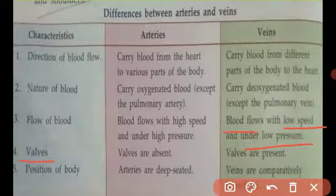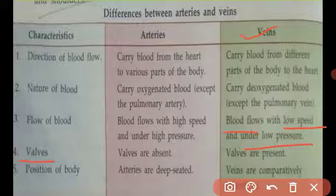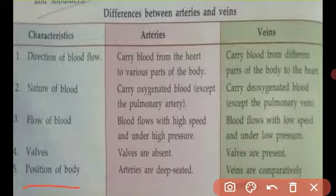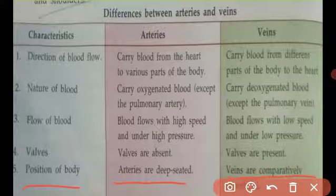Regarding valves: arteries have no valves because they carry blood from heart to body, moving with gravity, so no backflow prevention is needed. Veins carry blood from body parts like legs, lower abdomen, pelvic cavity — against gravity — so veins have valves to prevent backflow of blood. Regarding position: arteries are deep-seated in our body because they carry blood at very high speed and high pressure. Veins are comparatively superficial because they carry blood at low speed and low pressure.